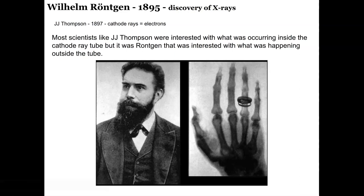I can't talk about where we're going without mentioning Wilhelm Röntgen, who was the discoverer of x-rays. That's his wife's ring, and that's one of the first images he obtained. They called them x-rays because they didn't know where these rays were coming from, but they knew the rays went through soft tissue. He was able to photograph plates and get images of where the rays could not pass through.